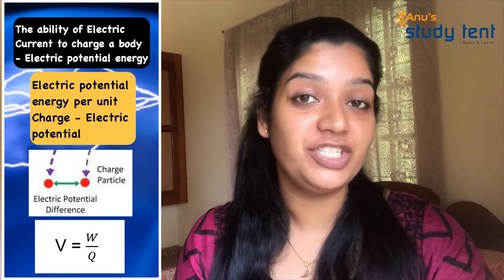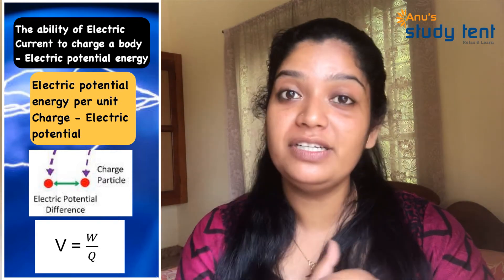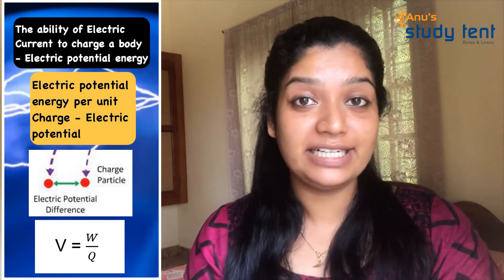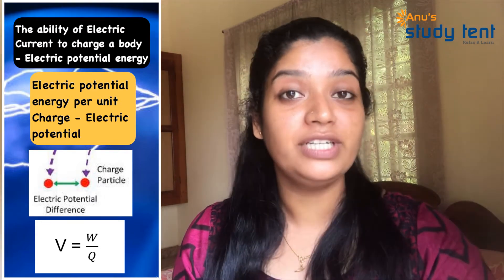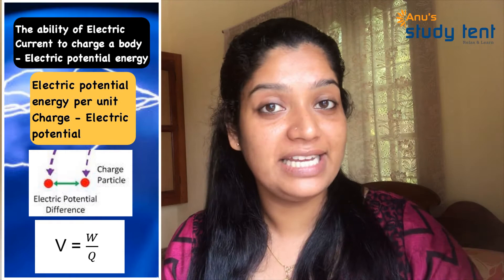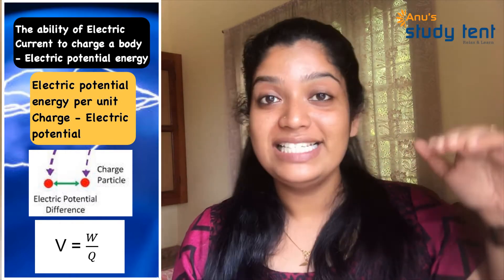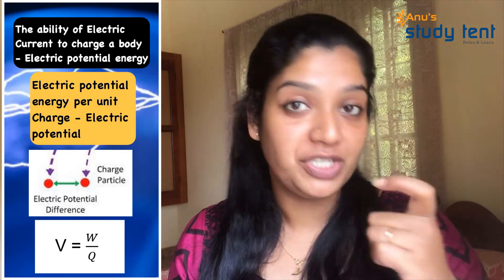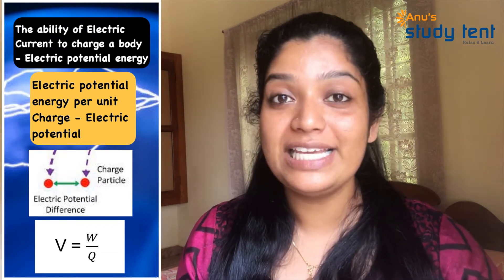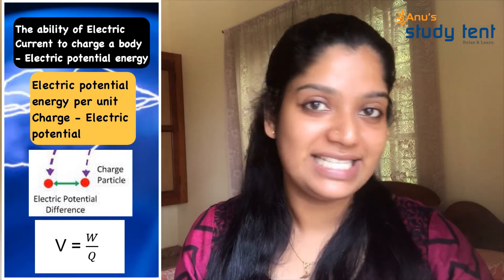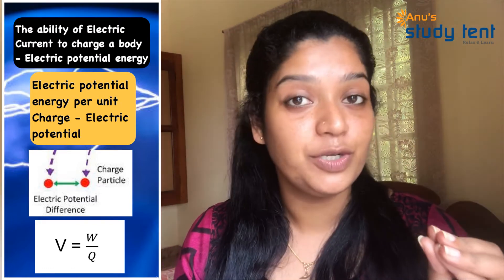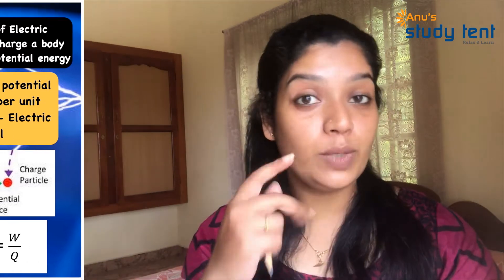Electric potential energy per unit charge is why we use electric potential. The electrical potential difference is the work done per unit charge. We measure V is equal to W by Q — work done in moving a unit charge. V is equal to W by Q. The SI unit of potential difference is the volt. 1 volt is equal to 1 joule divided by 1 coulomb.